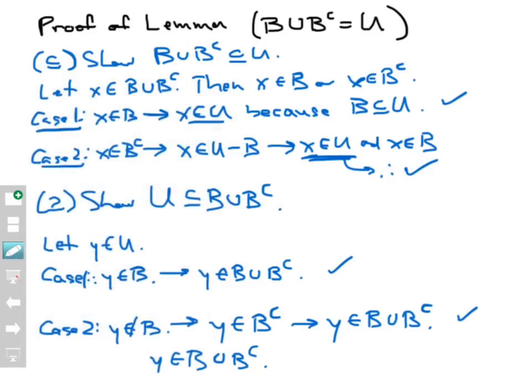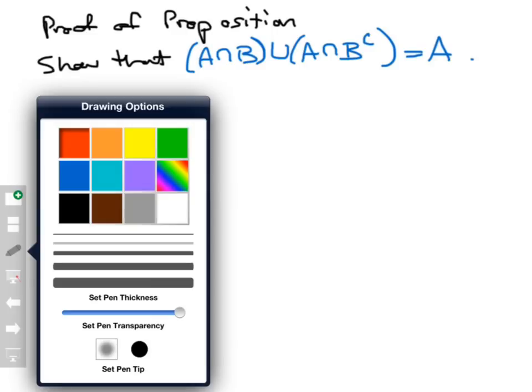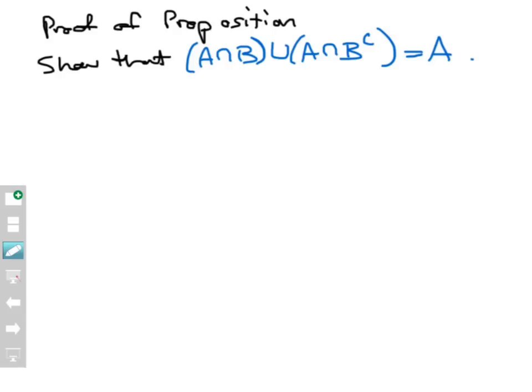Now that proves the lemma completely. Just to remind ourselves: B union B complement equals U. Let's move on to proving the main proposition: A intersect B union A intersect B complement equals A. We're going to do this in a very different way. Normally, using the choose-an-element method, I would have to prove this subset equality in two phases — show that all this stuff is a subset of A, and then show A is a subset of all this stuff. However, we can leverage our set identities to make this go a lot faster.